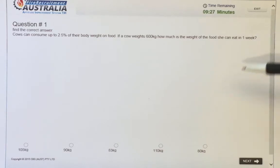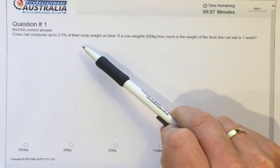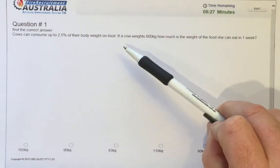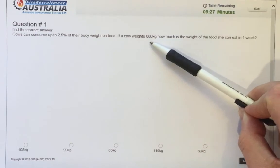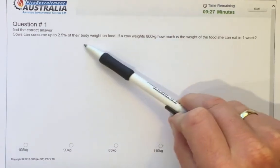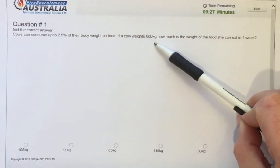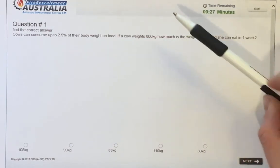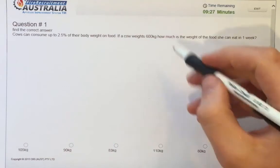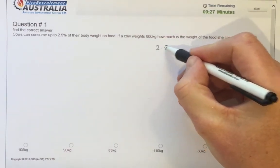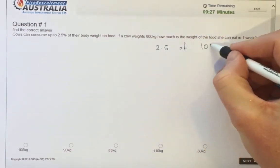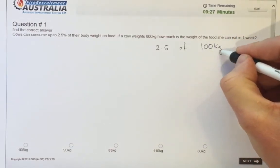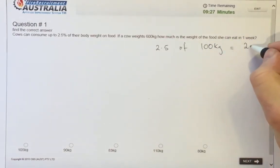Okay. So looking at the possible answers below, that's two and a half percent of their body weight a day. So two and a half, we need to figure out what two and a half percent of 600 kilograms is. So two and a half percent of 100 kilograms equals 2.5 kilograms.